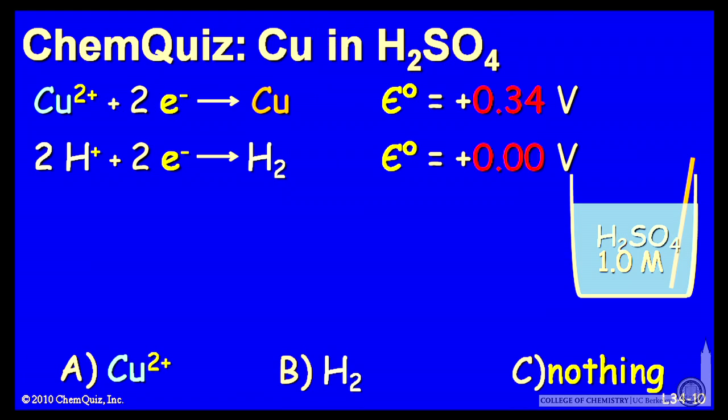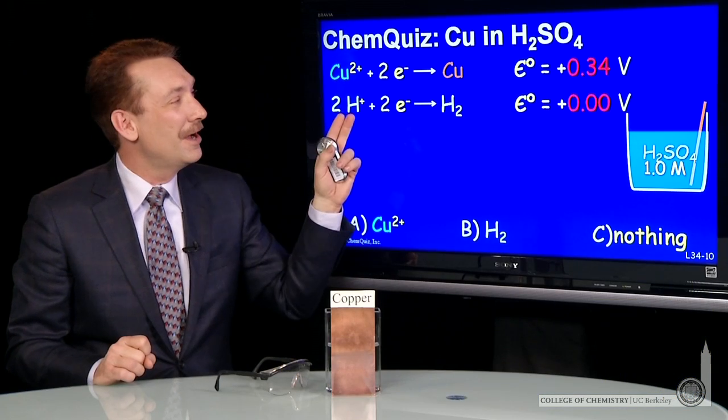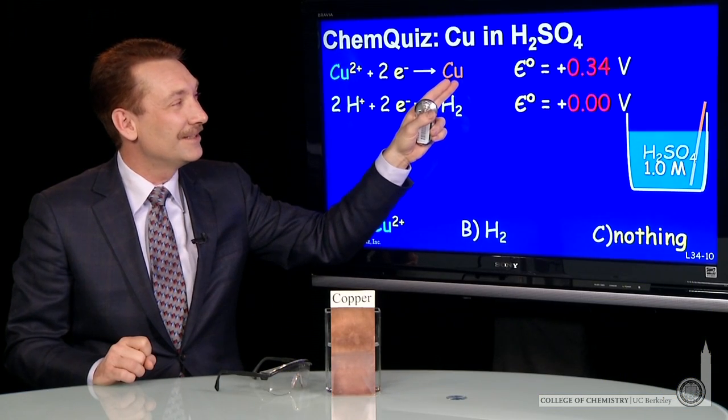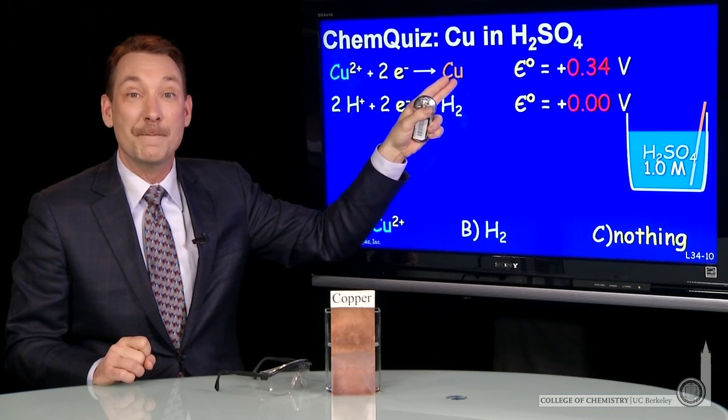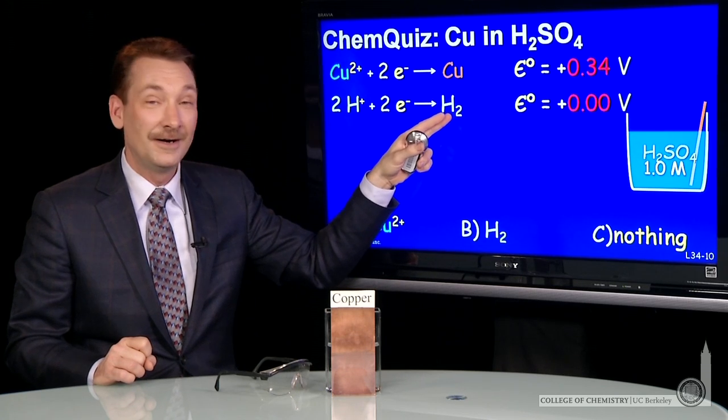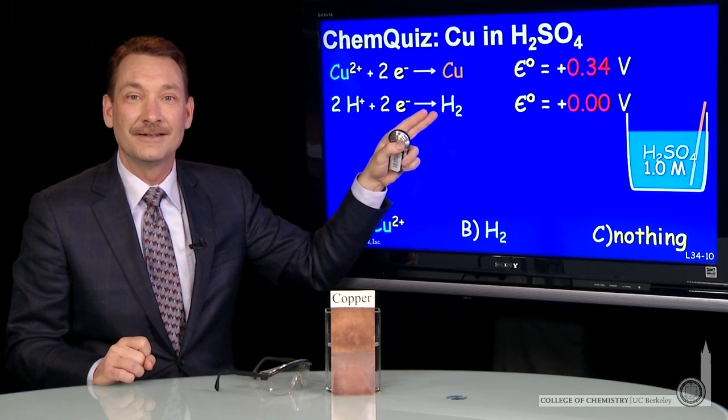This table says that the reaction of copper ions to form copper metal has higher potential, is favored over hydrogen ions forming hydrogen gas. So the favored state is copper metal over hydrogen gas. And in fact, this half cell would effectively cause the hydrogen half cell to run in reverse.